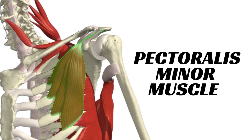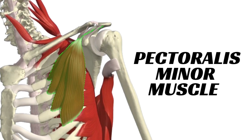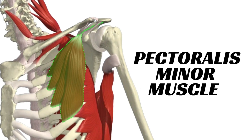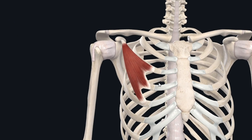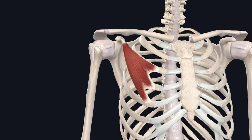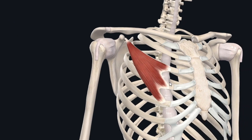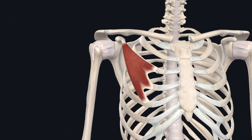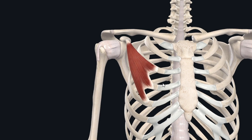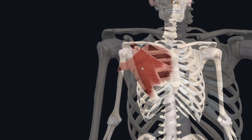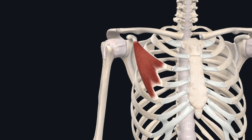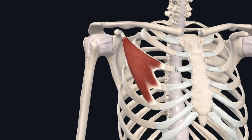Welcome back. Today we are going to study the pectoralis minor muscle, which is a muscle of the pectoral region. The pectoralis minor muscle is a thin triangular muscle lying on the chest wall. This muscle connects the thoracic wall to the shoulder girdle through its origin and insertion points, and it underlies the pectoralis major muscle.